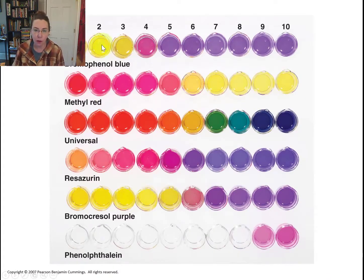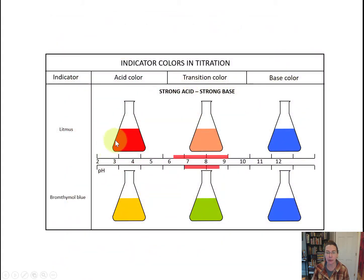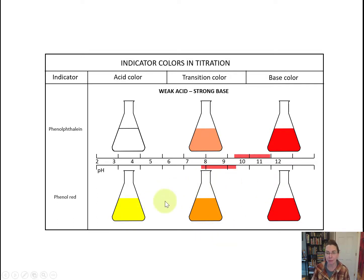Here's a summary of color shifts for common indicators: litmus goes from red to blue, with a peachy color in between. Bromothymol blue goes from yellow to blue, with green in between. Phenolphthalein starts colorless and ends up bright pink, with a peach color in between — this will be important later. Phenol red starts yellow and ends red, with orange in between. It's basically fifth-grade art color theory.